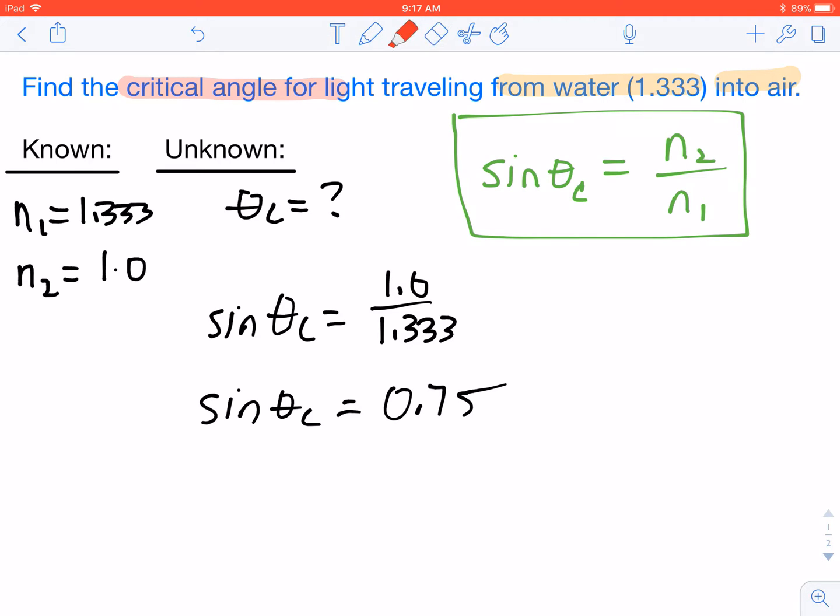We have to keep in mind that all we want to solve for is theta C. So we have to get rid of our sine function. In order to do that, to get rid of a sine function, we take the inverse sine. So we're going to take the inverse sine, that's sine to the negative 1, of 0.75.